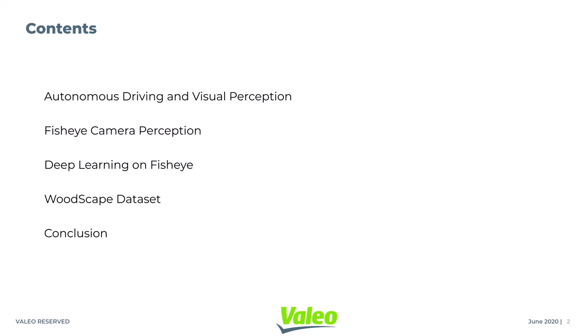For the next couple of minutes, here are the main topics I am going to focus on: a brief overview of autonomous driving and visual perception, followed by fisheye cameras and their applications in perception, and how we are using deep learning for these applications. A quick glimpse on our upcoming public dataset called WoodScape. Finally, I will conclude by recapping some of the highlights from these sections.